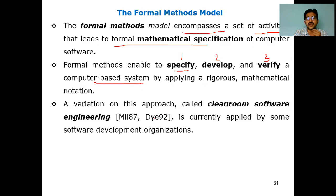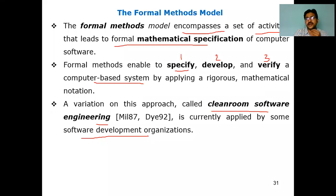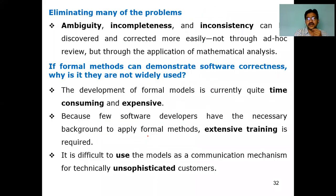A variation on this approach is called Clean Room Software Engineering. With small changes to the formal methods approach, another model was developed — by Mill in 1987 and IBM in 1992 — called Clean Room Software Engineering. It is currently applied by some software development organizations. Clean room software engineering is also a type of formal method, but with a small variation. However, it is not in our syllabus; only formal methods are covered.